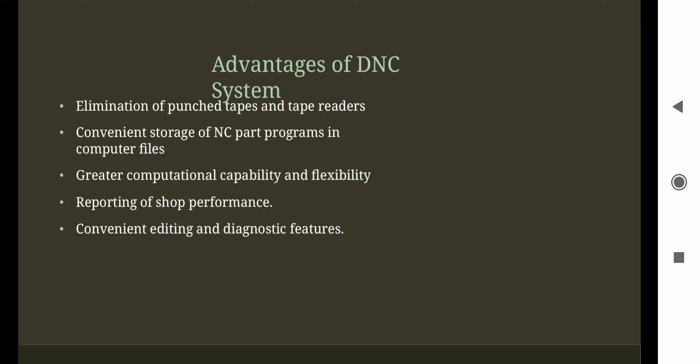The advantages of a DNC system: first, elimination of punched tape and tape readers. We can store programs in bulk memory, so we can completely eliminate punched tape and tape readers from the process. Second, convenient storage of NC part programs in computer files — we can conveniently store the NC part programs in the computer.